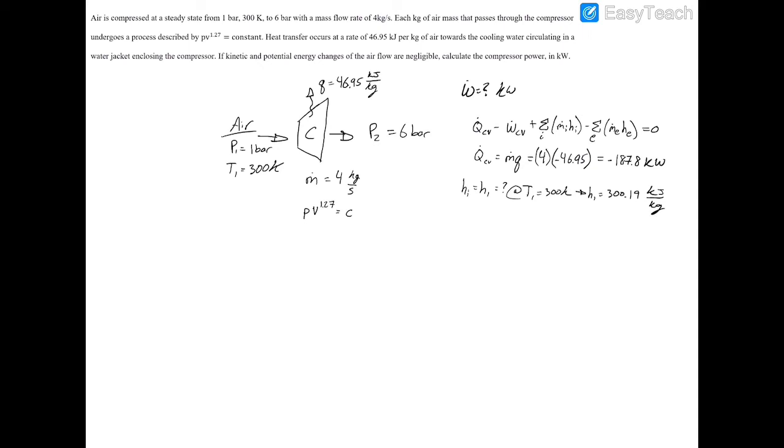Now, the final variable that we need to find the power is the exiting enthalpy, or HE, which is equal to H2, which is an unknown. To find the enthalpy at the inlet, or H1, we had to find the temperature.